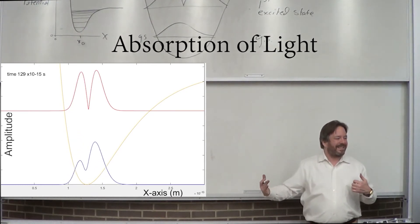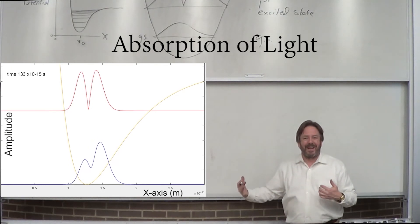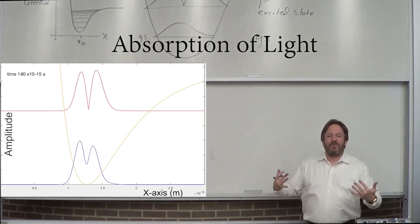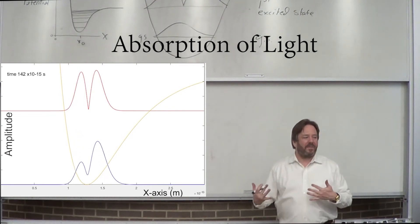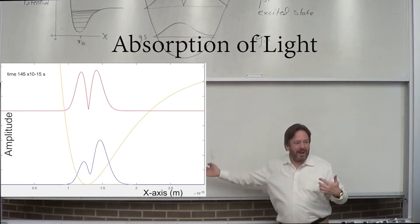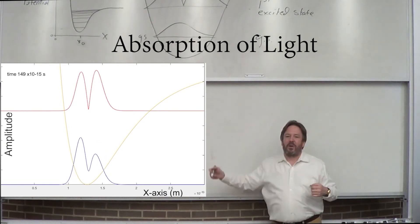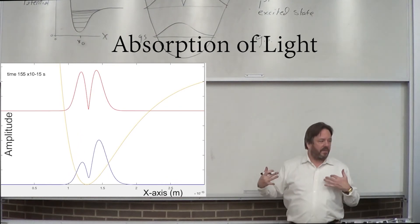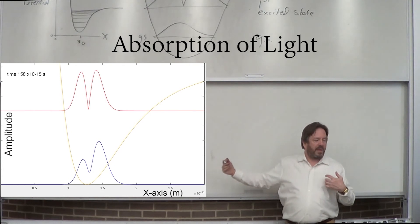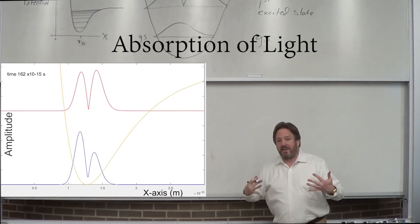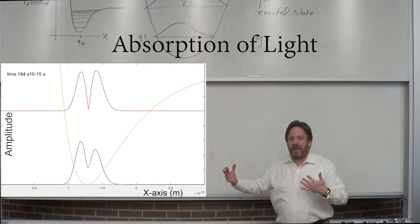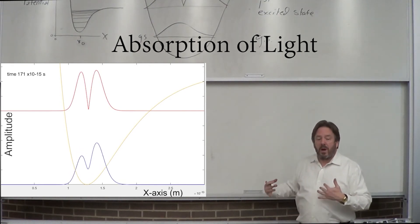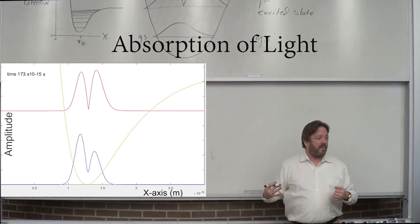It's turning into the first excited state and it's starting to look a lot like it. What I'm showing you is the act of absorption. This is why you have a peak in your FTIR spectrum — because the ground state is absorbing that energy and turning into the first excited state. Once it's fully transformed into the first excited state, the photon has disappeared, and it's now in that excited state. That absorption of energy registers as an absorption in your FTIR spectrum.